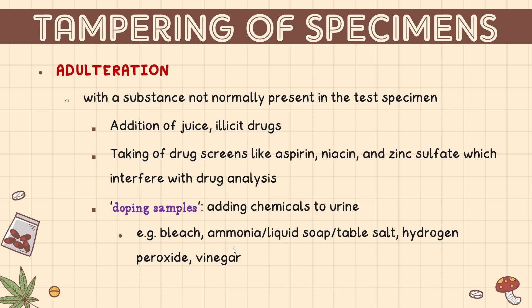Tampering of specimens is also commonly done when testing for the presence of a drug. Examples of tampering include adulteration, dilution, and substitution. Adulteration involves adding a substance not normally present in a test specimen — for example, adding juice or illicit drugs just to make the result negative.